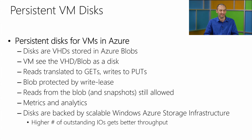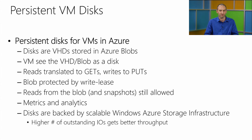You can take snapshots of a running VM using the Windows Azure Blob snapshot API to capture the state at that moment. The blobs on these disks still support metrics analytics, so you can analyze the types of IOs your VM is doing. The disks are backed by the full Windows Azure storage infrastructure, making it much more scalable than a traditional disk.